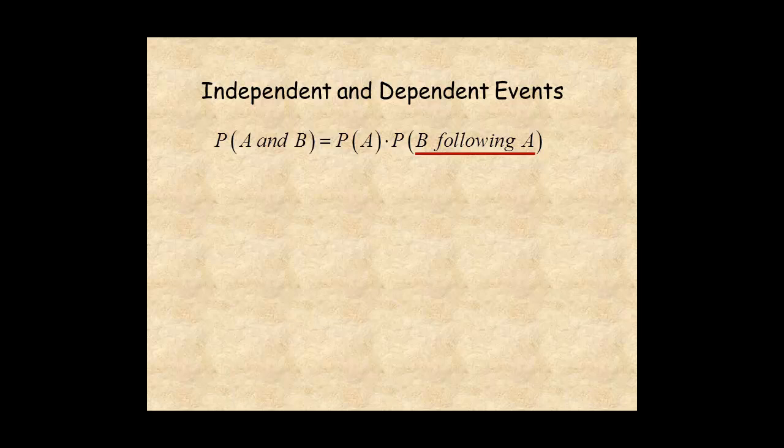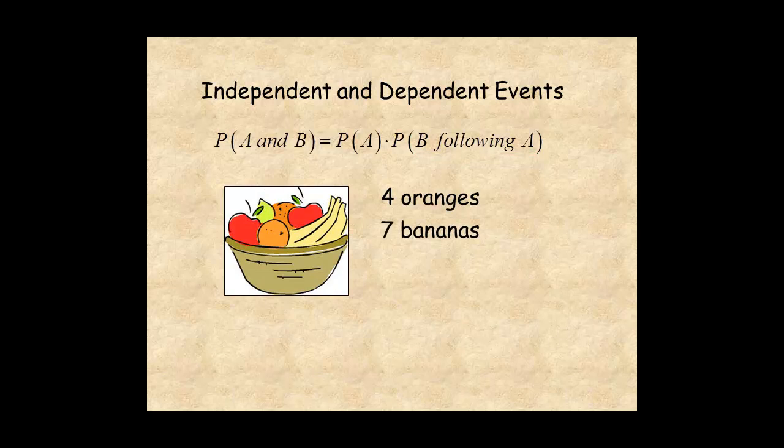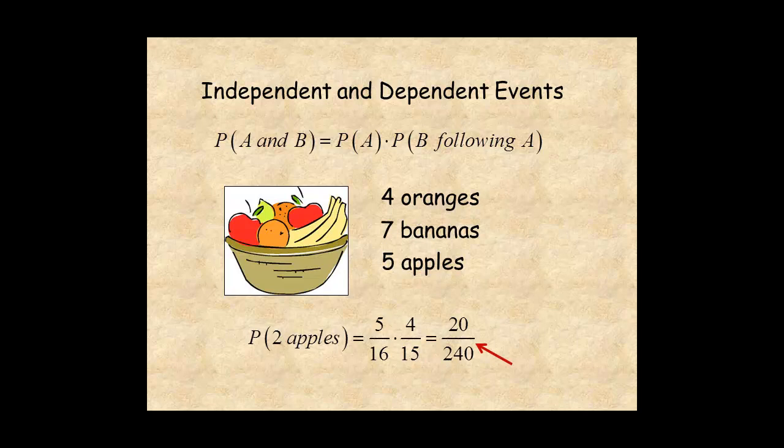For example, a bowl of fruit has four oranges, seven bananas, and five apples. The probability of selecting an apple and without replacing it another apple, is five over 16 times four over 15, which is 20 over 240, or about one chance in 12.